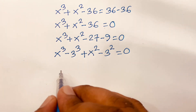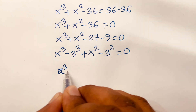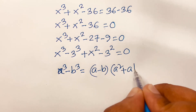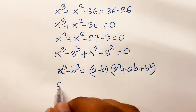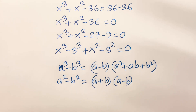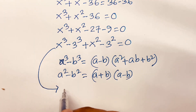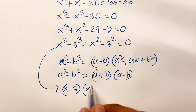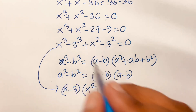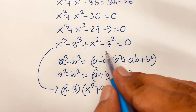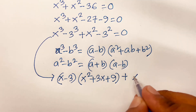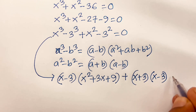We know the rules: a³ minus b³ equals (a minus b)(a² plus ab plus b²), and a² minus b² equals (a plus b)(a minus b). Applying both rules, this equation becomes (x minus 3)(x² plus 3x plus 9) plus (x plus 3)(x minus 3) equals 0.